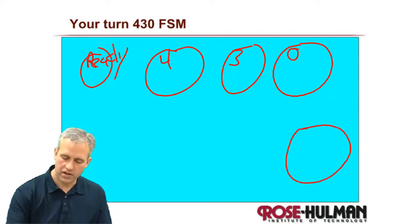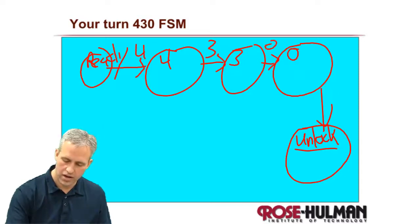And then if you read the description carefully, there's actually another state for unlock. I guess I could have called it success. And these transitions, of course, happen when you have a 4, a 3, a 0, and then an enter.